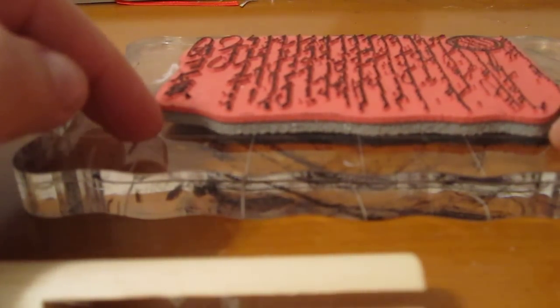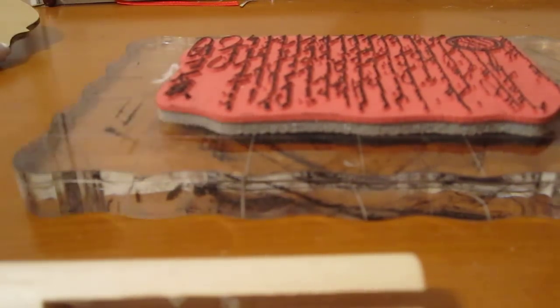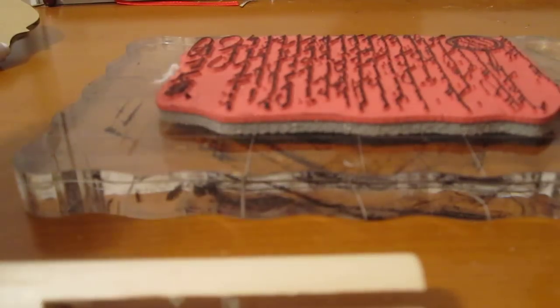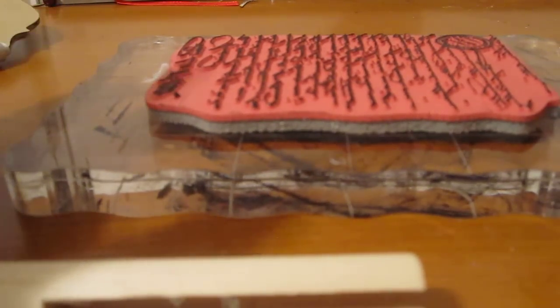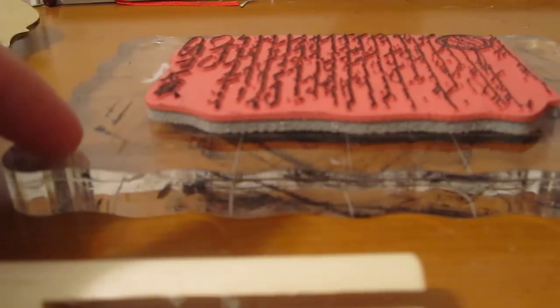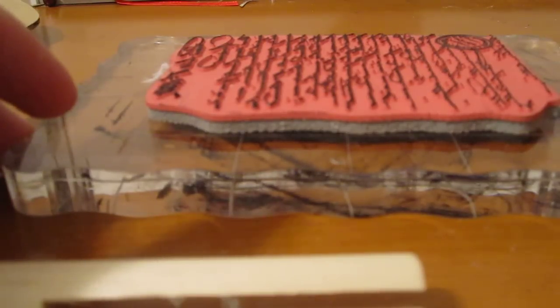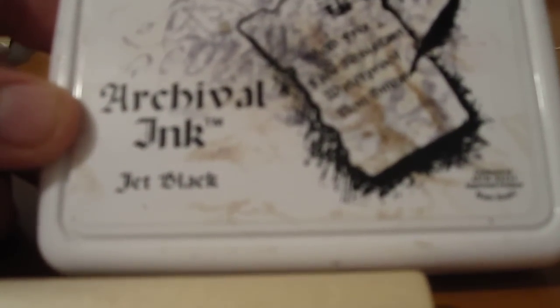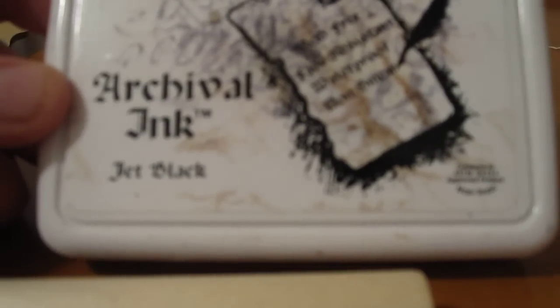And these do come on wood blocks. I don't know if this one in particular does, but you can get any script block. And you don't have to use script, but I particularly like it because it does give anything a vintage feel for a background. You're going to need the archival ink in black. You can use it in brown, then you would need to change up your background color, but I prefer the jet black.